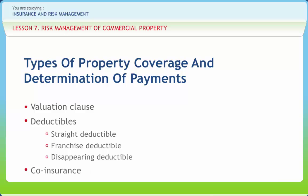A co-insurance clause has two main provisions. First, it requires you to carry an amount of insurance equal to a specified percentage of the value of the property if you wish to be paid the amount of loss you incur in full. Second, it stipulates a proportional payment of loss for failure to carry sufficient insurance. It makes sense that if insurance coverage is less than the value of the property, losses will not be paid in full because the premiums charged are for lower values.